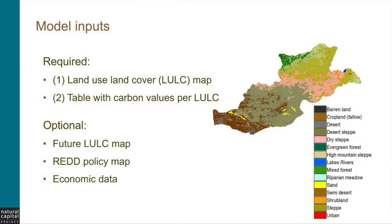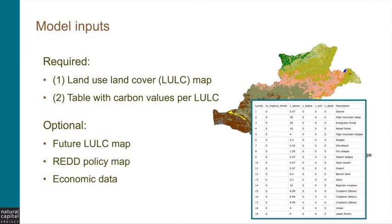So what are the data needs of this model? It requires mainly two inputs. The first is a land use land cover map, which we shorten to LULC. The second is what we call a biophysical table — a table with carbon stock values for each land use land cover class. Optionally, if you want to calculate sequestration, you need a land use land cover map for another point in time. Or if you want to perform REDD scenario analysis, you need a REDD policy map — another LULC with a scenario of implemented REDD policy — as well as economic data if you want to perform valuation.